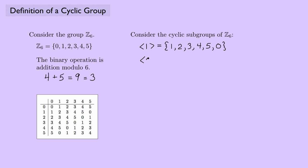Let's look at the cyclic subgroup generated by the element 2. I start with 2, then 2 plus 2 is 4, and 4 plus 2 is 6, but 6 mod 6 is 0, and then I'm back where I started. And how about the cyclic subgroup generated by 3? I'll start with 3. 3 plus 3 is 6, but 6 mod 6 is 0, so I'm back where I started.